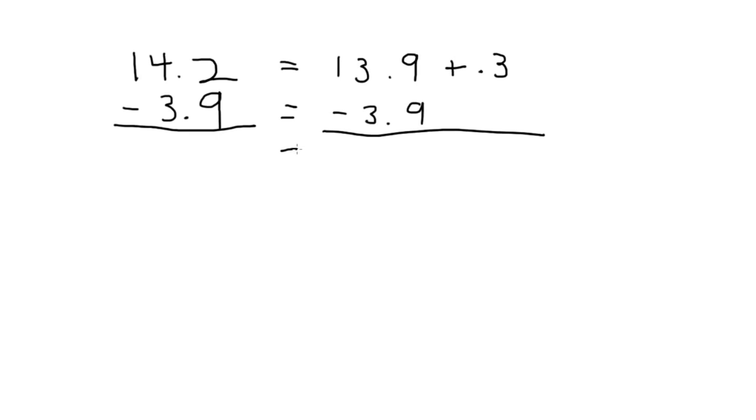Next you would subtract the numbers. 13 and 9 tenths take away 3 and 9 tenths is 10. Since you can subtract 9 tenths from 9 tenths there is no regrouping.